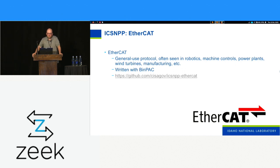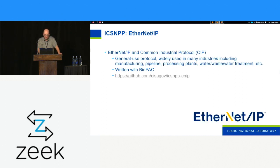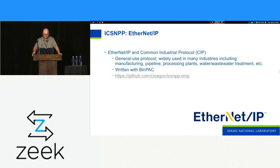EtherCAT is a protocol designed for real-time distributed control of industrial systems, with a goal of short cycle times and low communication jitter. This one was released last summer. Despite what you'd think, EtherNet/IP — the IP stands for Industrial Protocol, not internet protocol — adapts the Common Industrial Protocol (CIP) for Ethernet networks. Its object-oriented design makes it widely used in all sorts of industrial networks, and according to Wikipedia it has about 30% of the share of industrial Ethernet network traffic. This was also released with our first batch of parsers in January 2021.